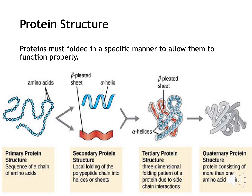As seen in the diagram, proteins start as a sequence of amino acids in a polypeptide chain — this is known as the primary structure, so it's really basic. Using bonding, the primary structure starts to fold into secondary shapes. Further bonding causes a 3D structure to form, creating the tertiary structure. Quaternary structures are the final stage of protein creation, where proteins contain more than one amino acid chain.